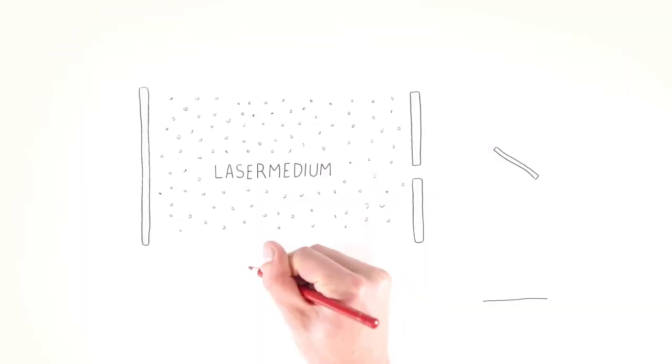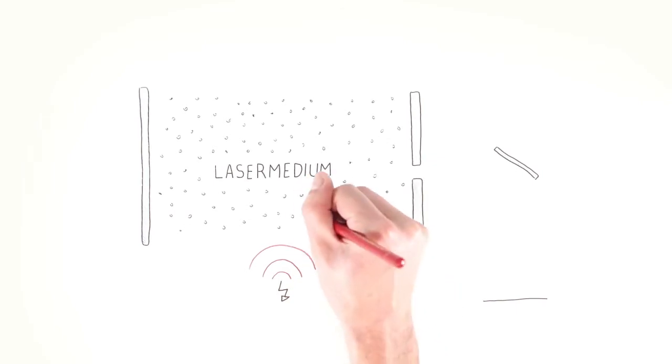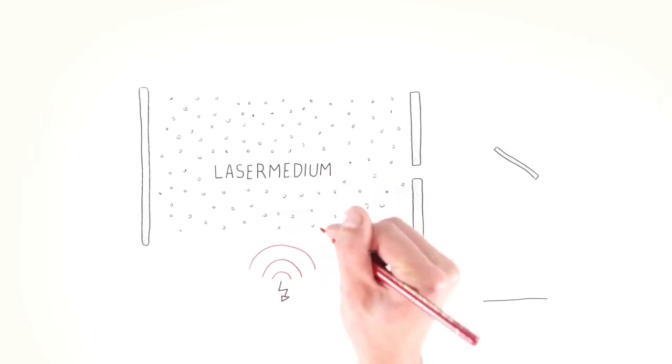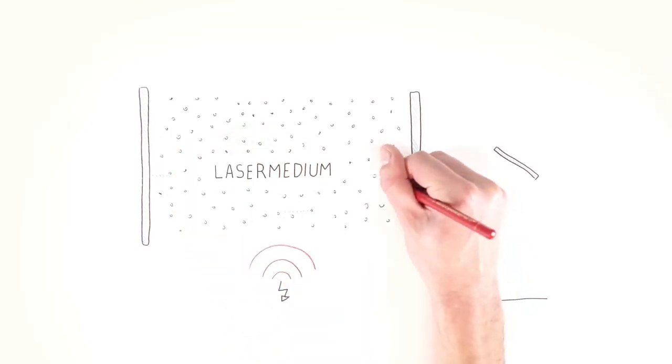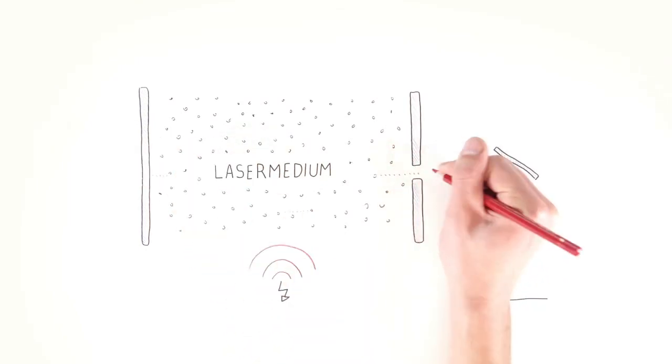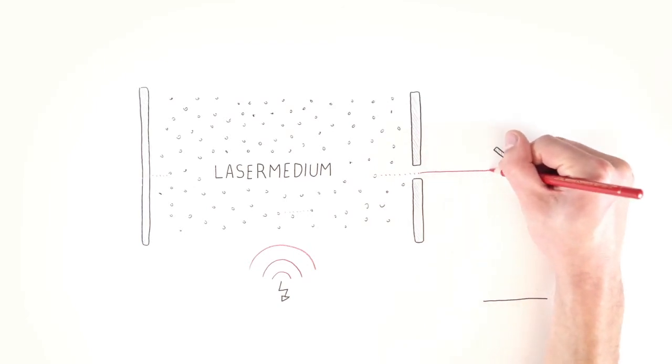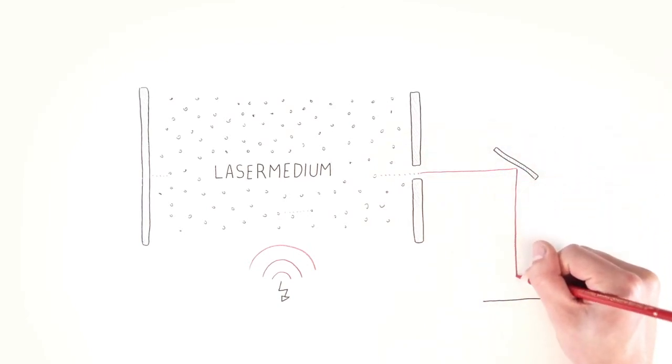Energy is repeatedly pumped into the laser medium, stimulating the particles so that they can release more photons. The mirrors reflect the photons, thereby increasing the number of photons further and further. A directional beam is formed.